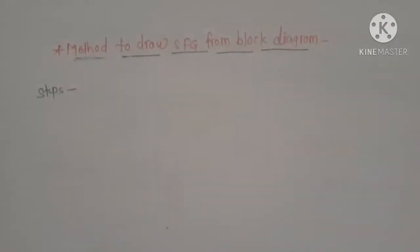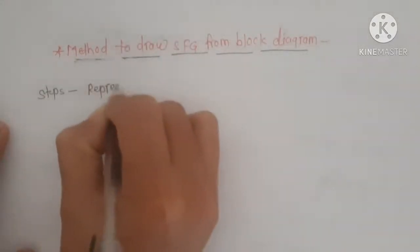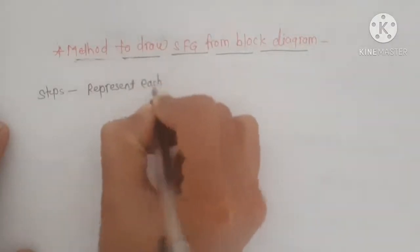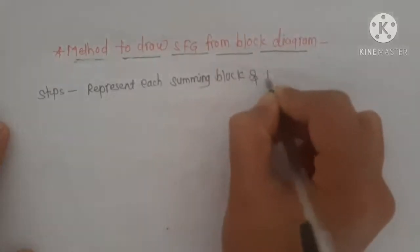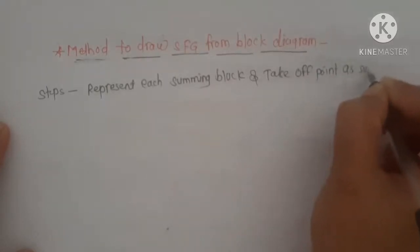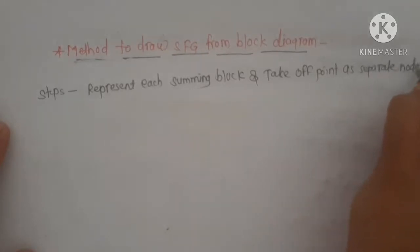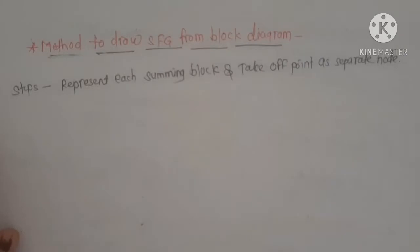In the case of a system equation, we saw that the variables are considered as nodes. So in a block diagram, each summing point and takeoff point are considered as separate nodes. The first step is: represent each summing block and takeoff point as a separate node.